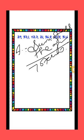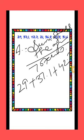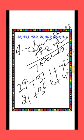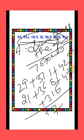First of all, we will add all the given quantities: 29 plus 37.1 plus 42.7 plus 21 plus 36.8 plus 40.5 plus 31.6, divided by 7. There are a total of 7 quantities. Adding all gives 238.7 divided by 7, which is equal to 34.1.